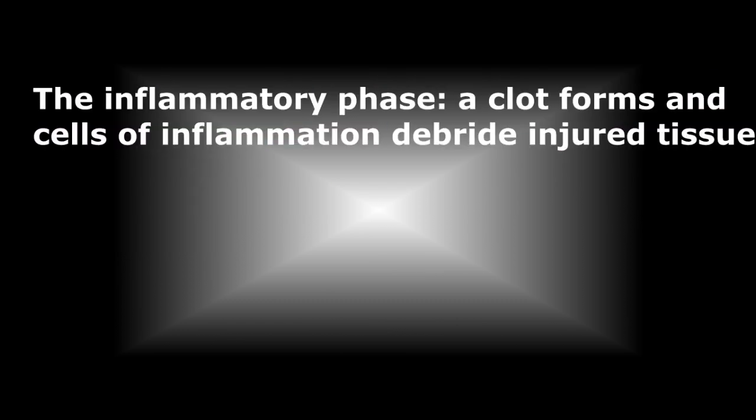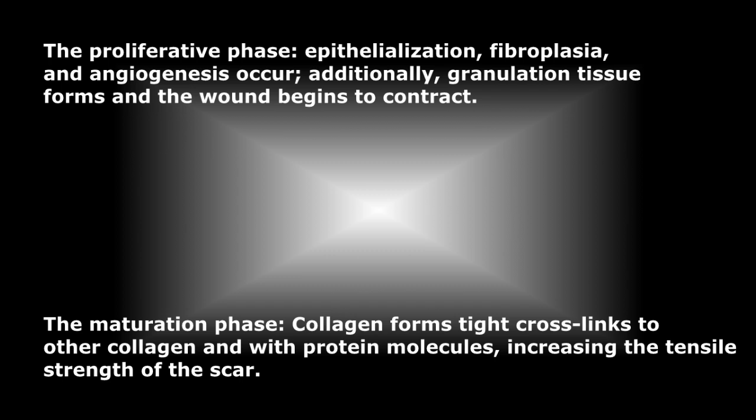The inflammatory phase: a clot forms and cells of inflammation debride injured tissue. The proliferative phase: epithelialization, fibroplasia, and angiogenesis occur; additionally, granulation tissue forms and the wound begins to contract. The maturation phase: collagen forms tight cross-links to other collagen and with protein molecules, increasing the tensile strength of the scar.